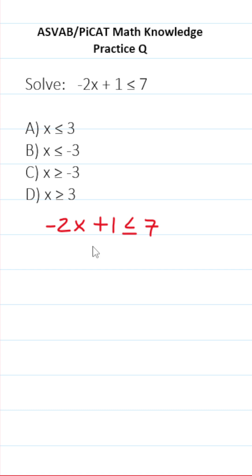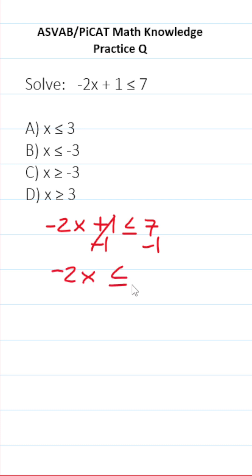Let's go ahead and start by subtracting 1 from both sides. This crosses out, leaving you with negative 2x on this side, less than or equal to 7 minus 1, which is 6.